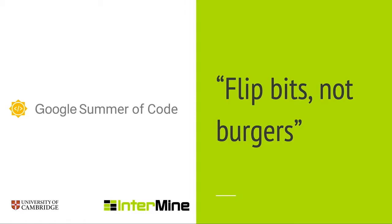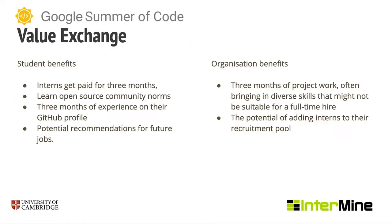Google Summer of Code, also known as GSOC, is a program that pays students during the Northern Hemisphere summer break to spend three months coding on an open source project. There are benefits for both students and mentoring organizations. Interns get paid for three months, they get to learn open source community norms, they get three months of experience on their GitHub profile, and they get potential recommendations for future jobs.